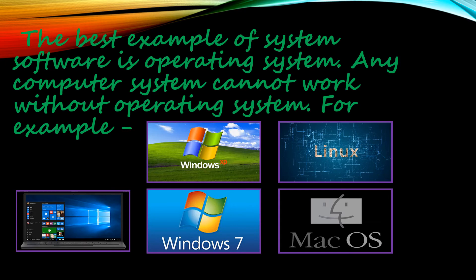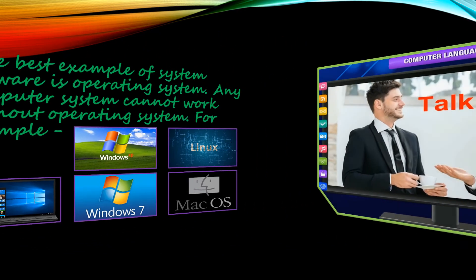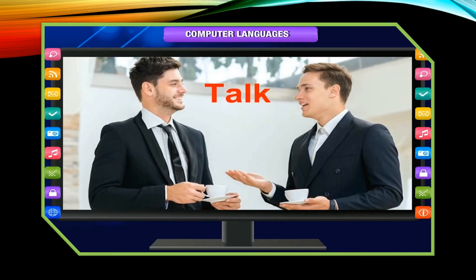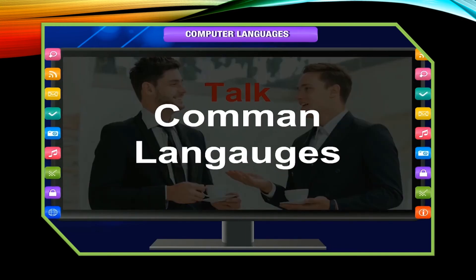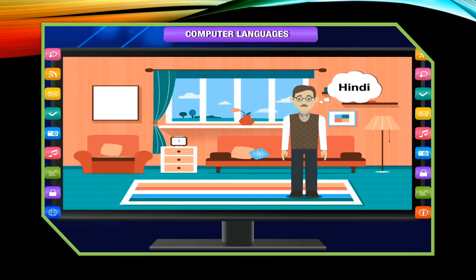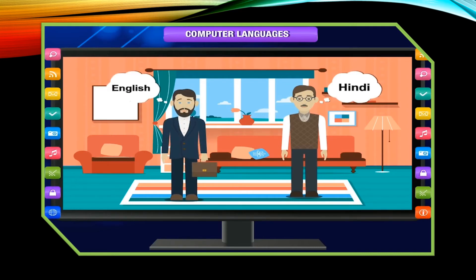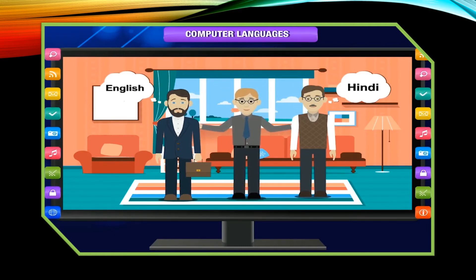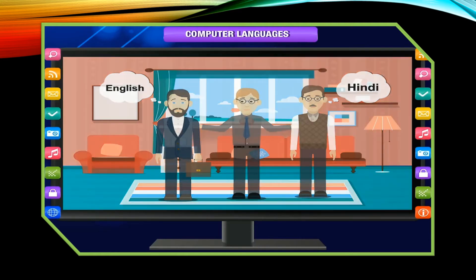Now, before discussing some different types of system software, let us first understand the use of interpreter, compiler, and translator. In order to communicate with another person, we need a common language so that both persons can understand each other. If one person speaks Hindi and the other speaks English, then both of them cannot understand each other's language. They need an interpreter or translator who can interpret each other's language to both of them.